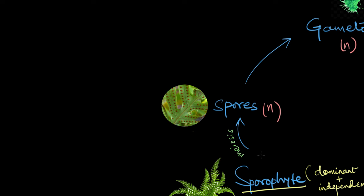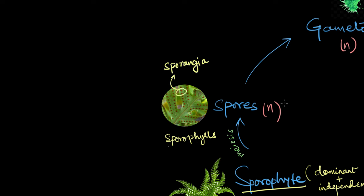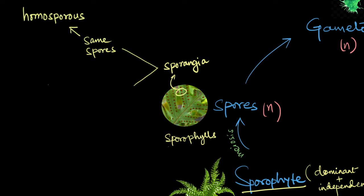As the sporophyte matures, it develops specialized leaves called sporophylls, which bear spore-producing structures called sporangia. Inside the sporangia, haploid spores are formed via meiosis. Most pteridophytes have only one kind of sporangia, which produces only one type of spores. Such plants are known to be homosporous.